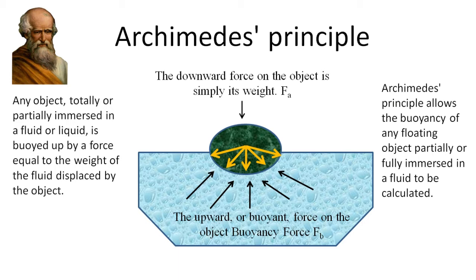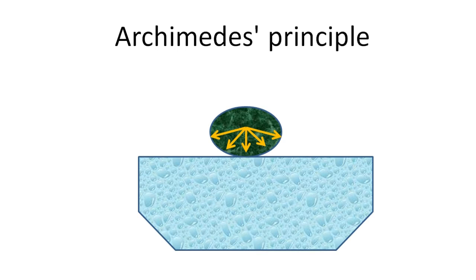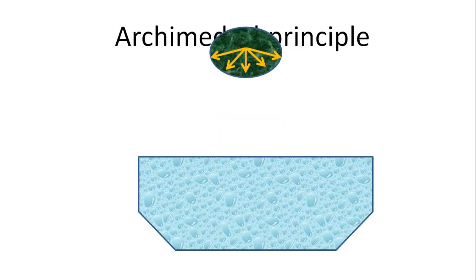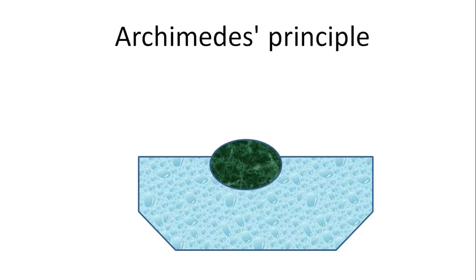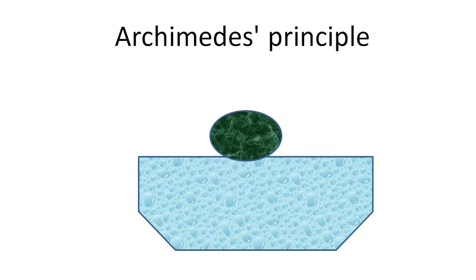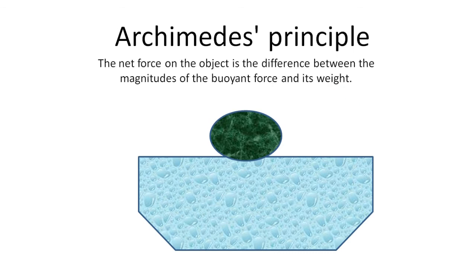So how we formulate Archimedes principle? The net force on the object is the difference between the magnitude of buoyant force and its weight. If this net force is positive then the object rises.